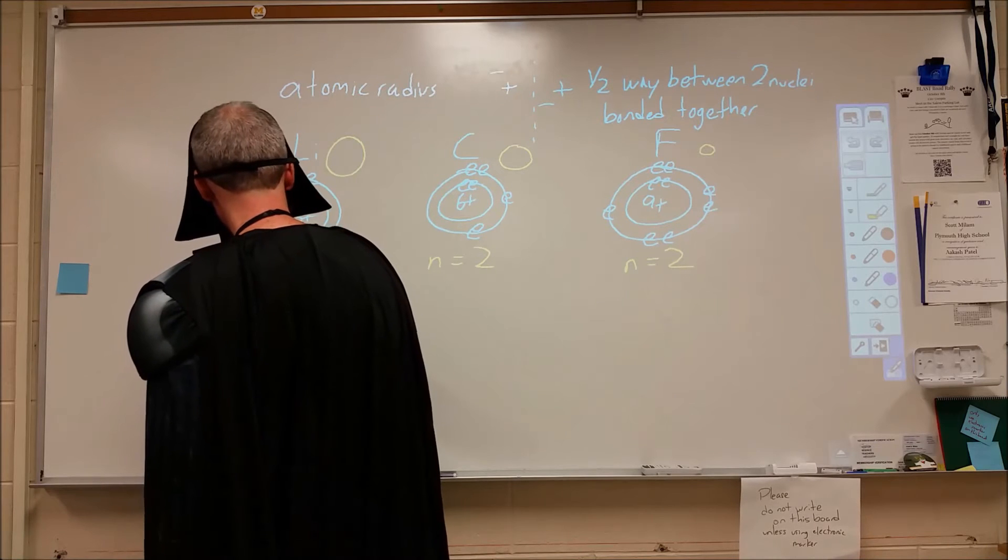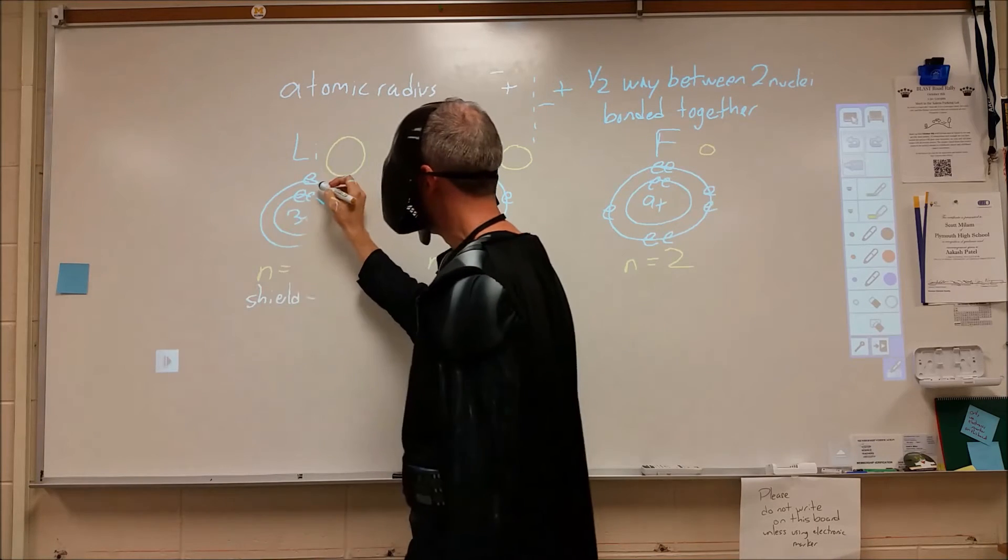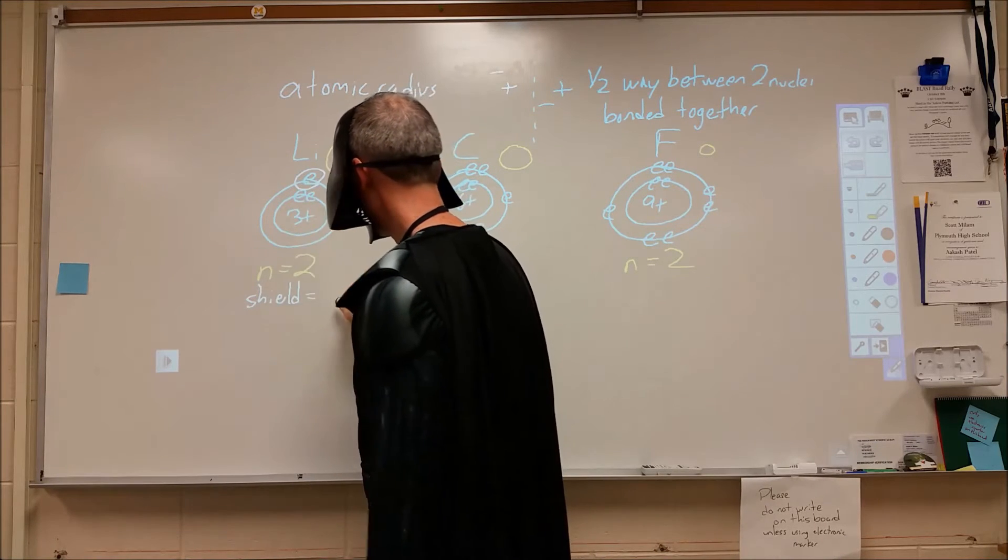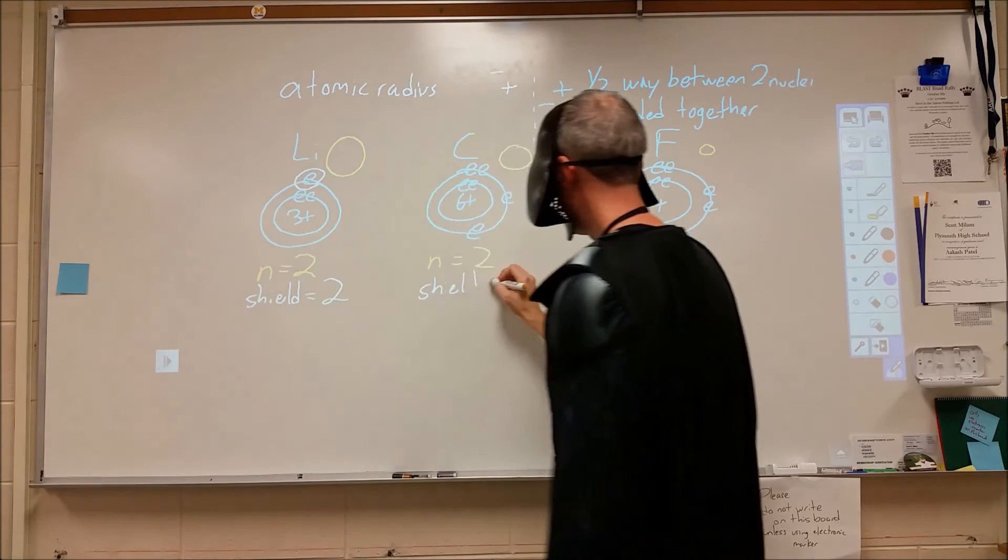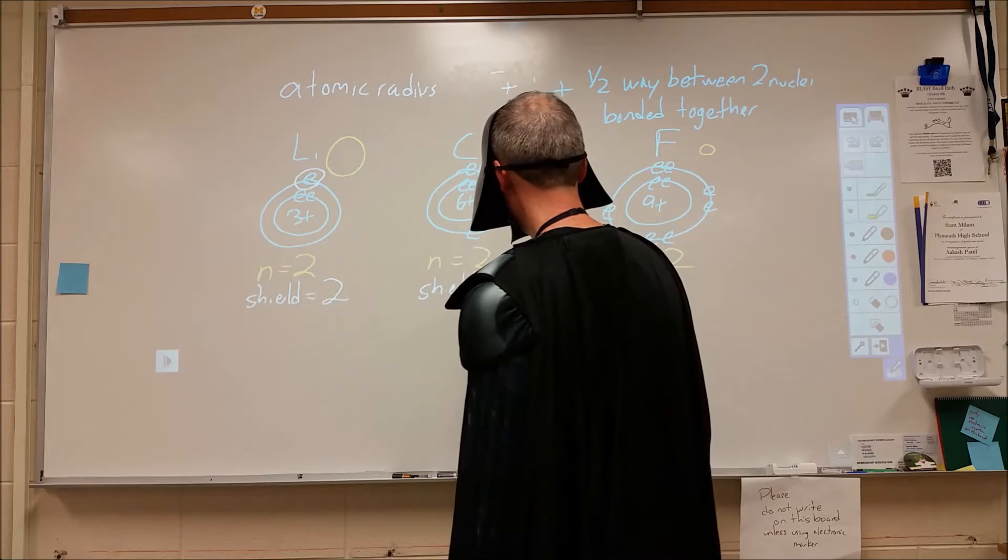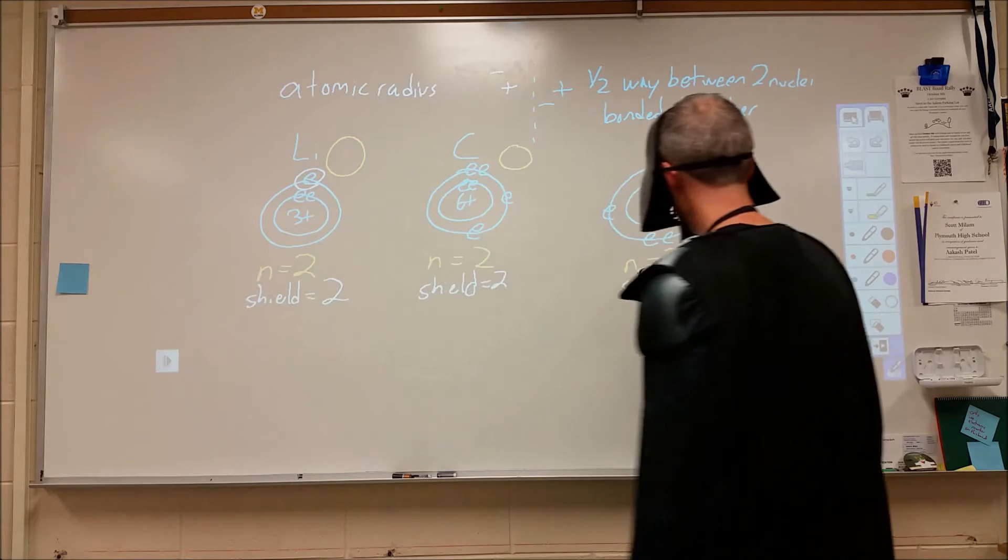For our shielding, for our valence electron, we have two electrons shielding, and we have the same shielding in all three atoms.